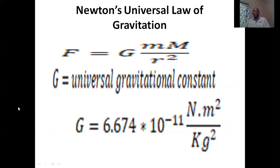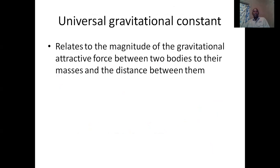The universal gravitational constant is this quantity shown here, which is 6.674 multiplied by 10 to the power negative 11. It has these units: Newtons times meters squared over kilograms squared. The gravitational universal constant relates the magnitude of the gravitational attractiveness between two bodies to their masses and the distance between them.